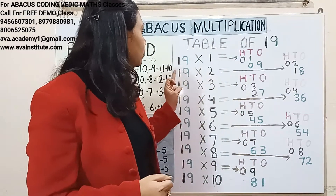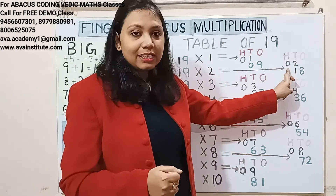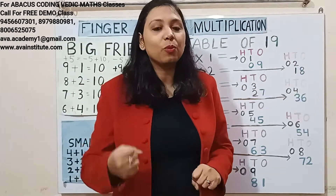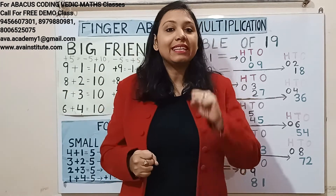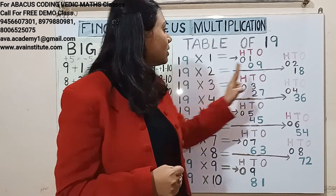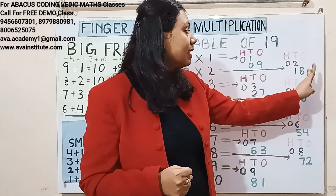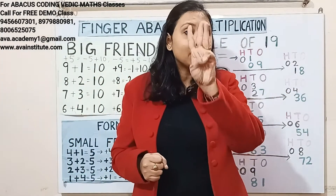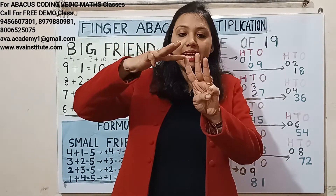Next, 19 twos are: 1 two is 2 — in hundreds we represent 0 and in tens we represent 2. 9 twos are 18 — in tens we represent 1 and in ones we represent 8.